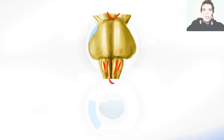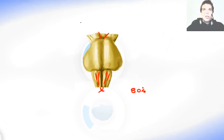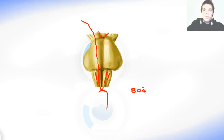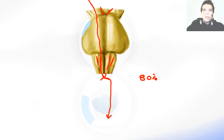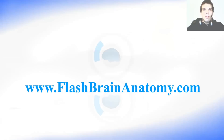Somewhere over here is the decussation of the pyramids — the place where almost 80% of the motor fibers in the pyramids cross. The fibers come from the brain, go to the pyramids, and at the decussation they cross the midline, then continue downward as the lateral cerebrospinal fasciculus. This is a very important place because it is where the spinal cord begins and the medulla oblongata ends.